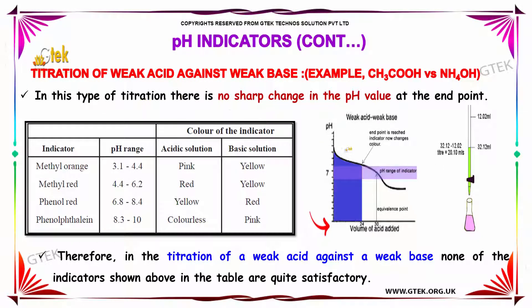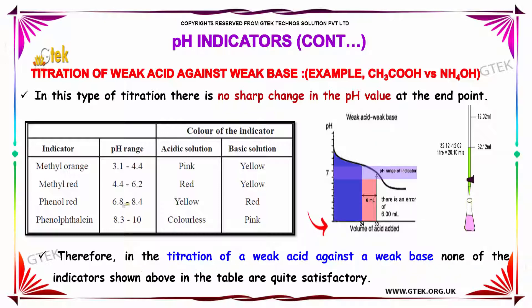In the titration of a weak acid against a weak base, there is no sharp change in pH value at the endpoint. Therefore, none of the common indicators is satisfactory for this type of titration.